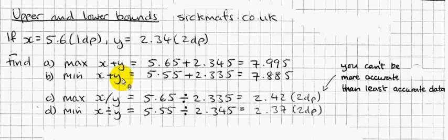It gets more interesting when you're trying to find the maximum and minimum when you're dividing the two numbers. When dividing two numbers to get the maximum result, you want to maximize the numerator and minimize the denominator. Because the bigger the number on top, the bigger the overall answer to the division. And by dividing by a smaller number, you actually get a bigger answer. So you want to use the upper bound of x and the lower bound of y.